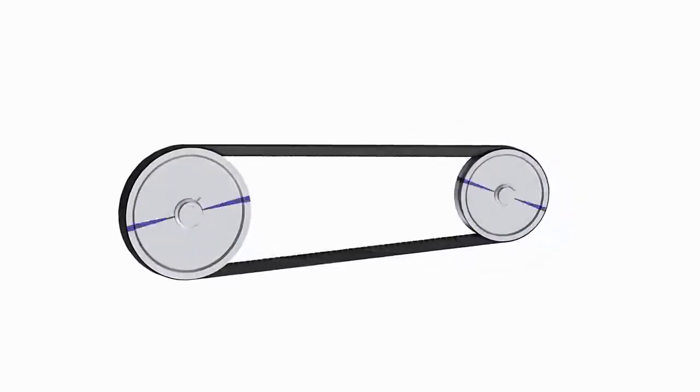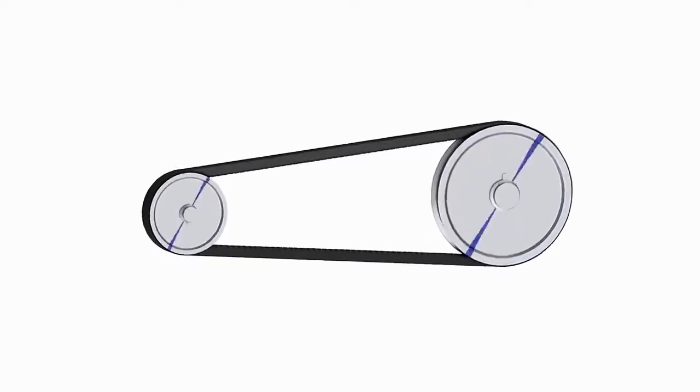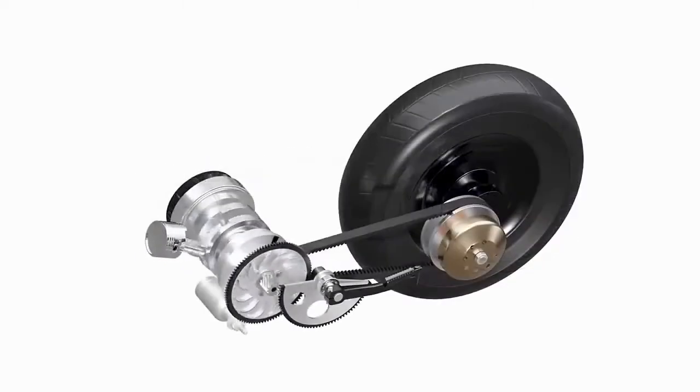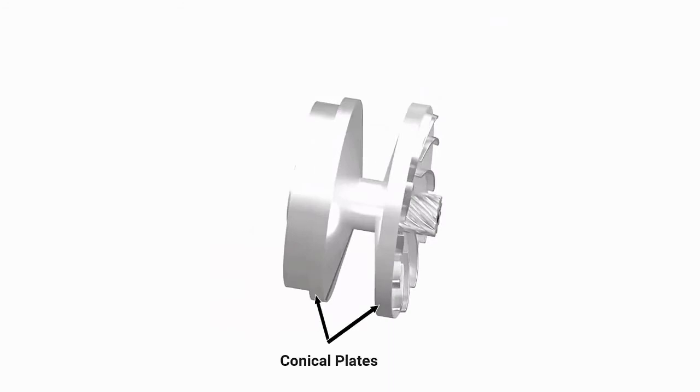It is not possible to simply change the diameters of solid pulleys as shown in this demonstration, so engineers developed certain mechanisms to attain similar mechanical characteristics. A variator assembly is used for this purpose. Here, the pulley is made up of two conical plates.